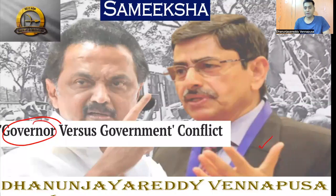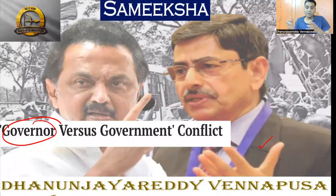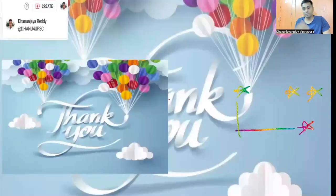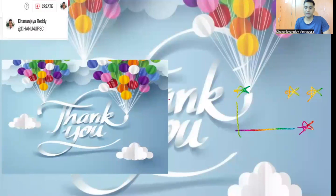This is not only with RN Ravi — a similar pattern can be observed in many states where the BJP is not in power: in Maharashtra, Telangana, recently in Karnataka, Kerala, and West Bengal. These are the center-state relations we are seeing. Federal relations is a very important aspect — please remember this as an example, and you can write about it in your Ethics as well as GS Paper 2. Thanks for joining, have a great day.